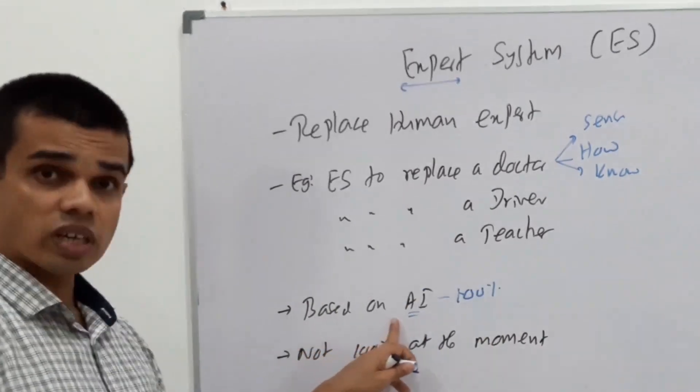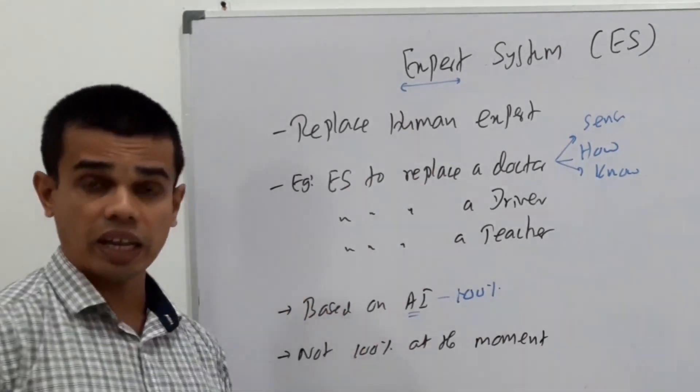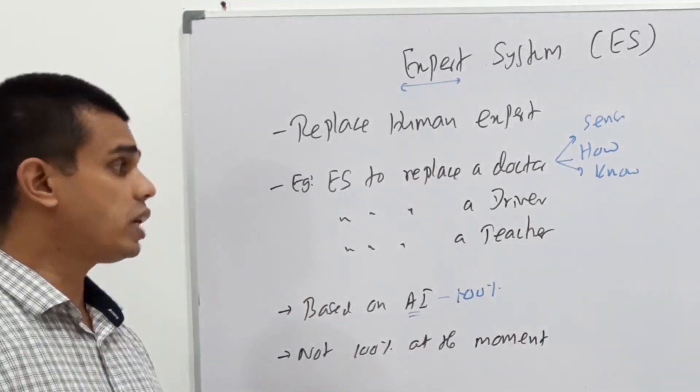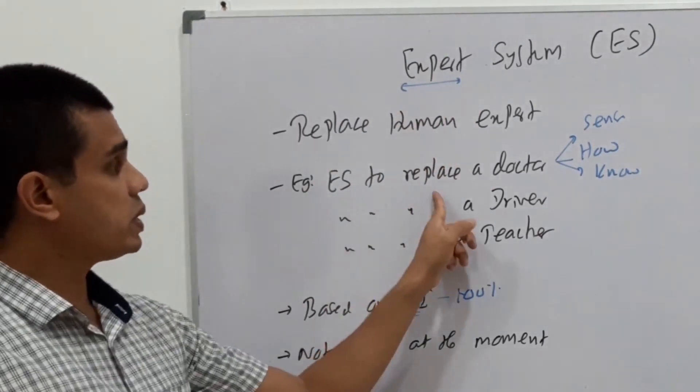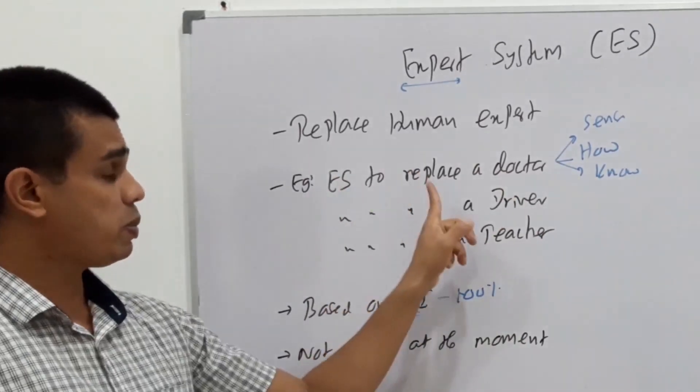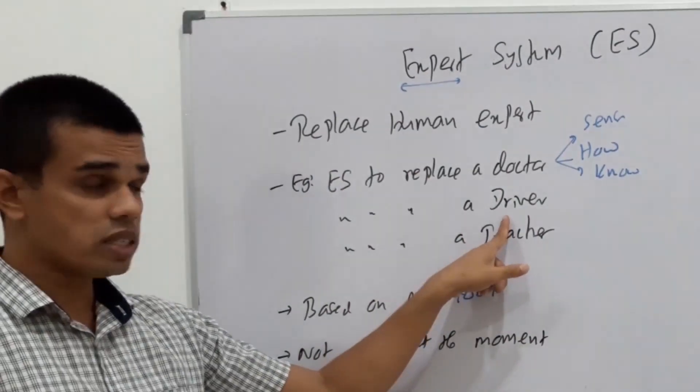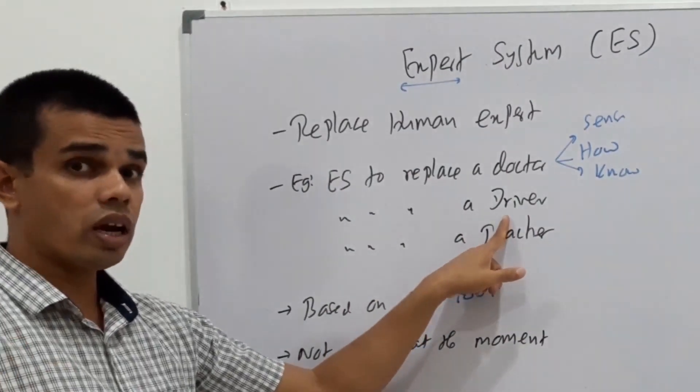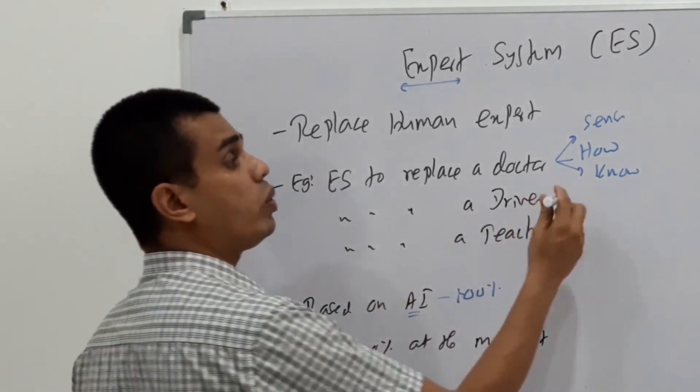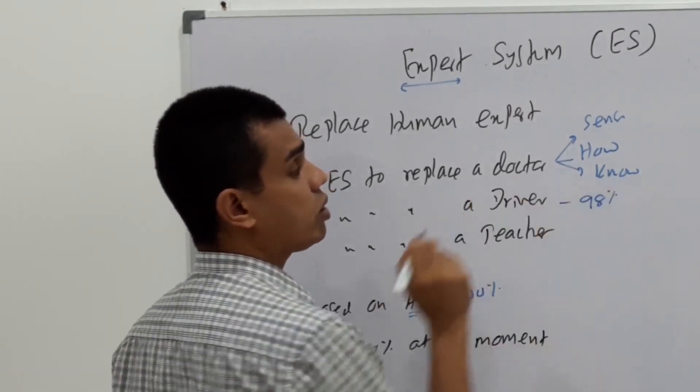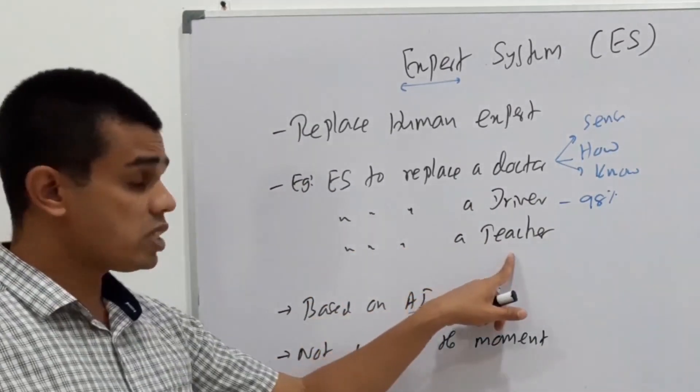Artificial intelligence, intelligence like human should be there. But AI is not 100% accurate in the modern world. So we don't trust those systems. That's why we say expert systems are not 100% accurate at the moment, but in the future, it may be accurate. Some of the expert systems are an expert system to replace a doctor, expert system to replace a driver. We know that now there are vehicles where they can drive on their own without a human driver. They are 98% accurate, but not perfect, not 100%.